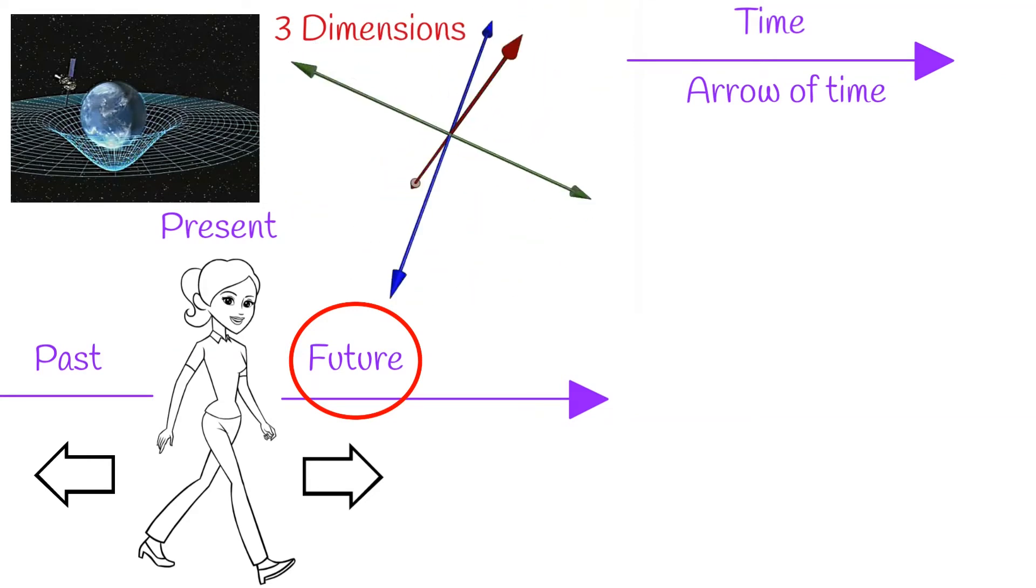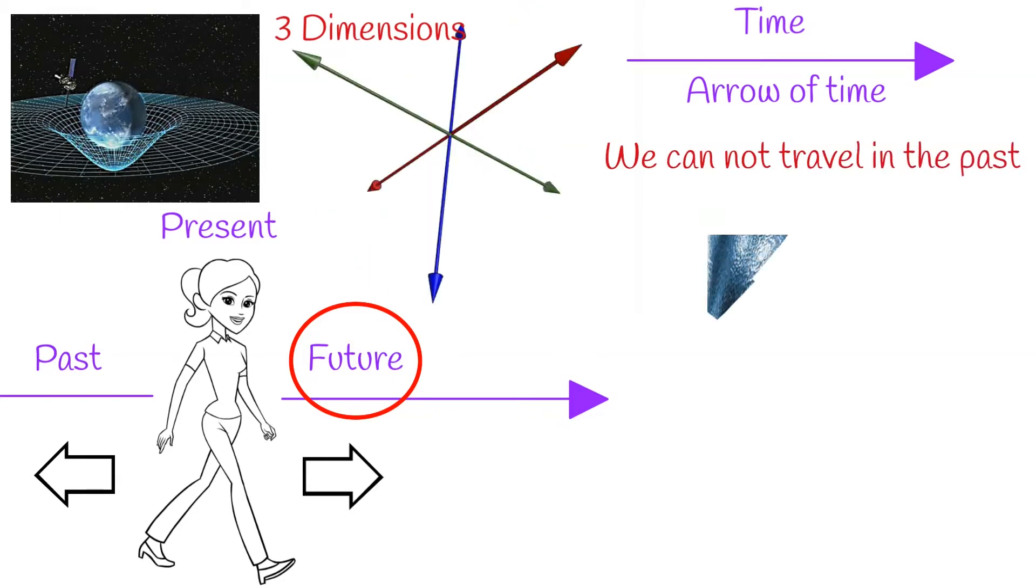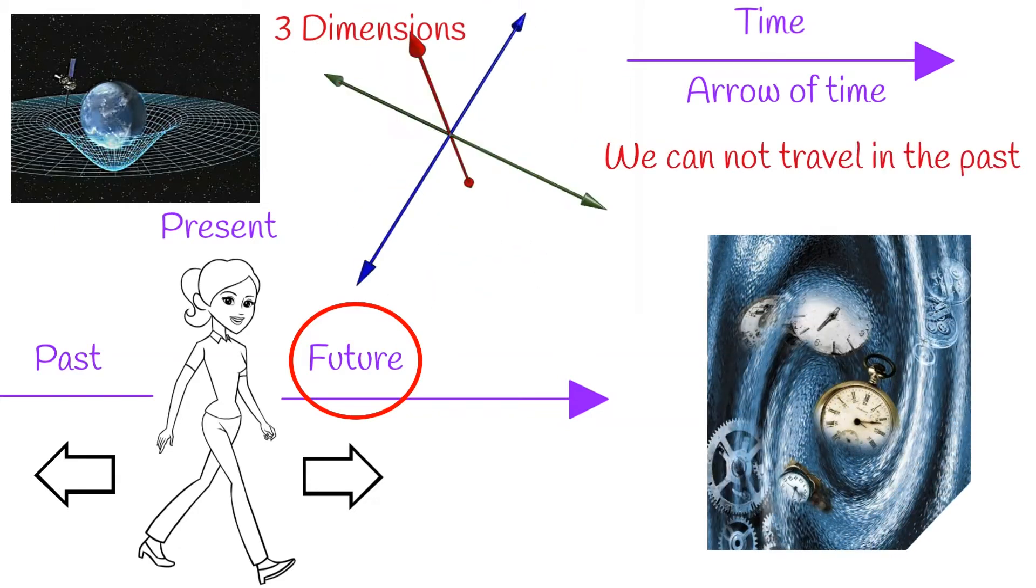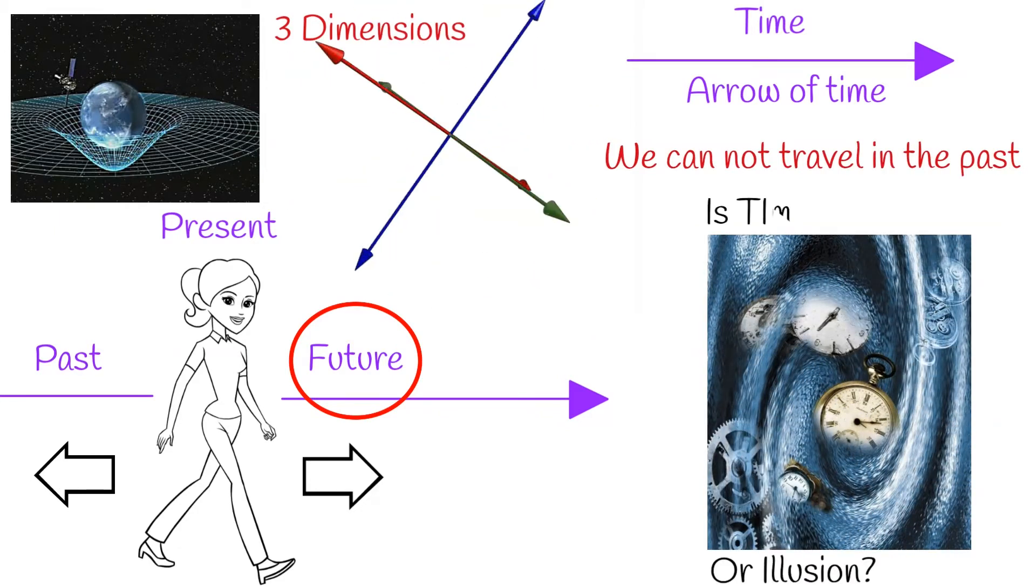The direction of time is predefined and cannot be changed. Time goes only forward. Only from past to present and to future. It is called the arrow of time. That's why we cannot travel in the past and cannot change our past.